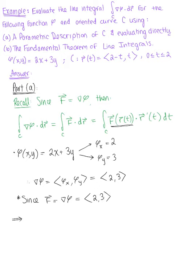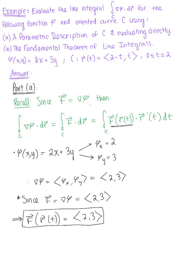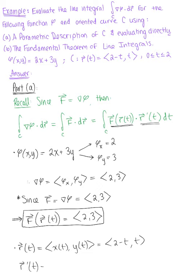Since there are no x or y components in this vector, the parametrized vector f of r(t) is simply (2, 3). Next, we need to find the tangent vector. We are given the parametric description of our curve with components x(t) = 2 minus t and y(t) = t. Taking the derivative, the tangent vector r prime of t is (-1, 1).